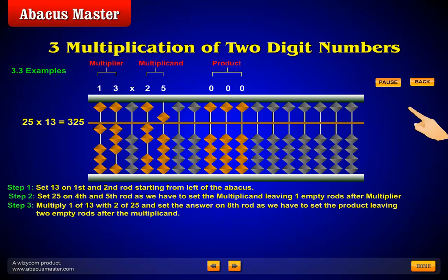Multiply 1 of 13 with 2 of 25 and set the answer on eighth rod, as we have to set the product, leaving two empty rods after the multiplicand.